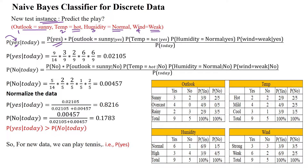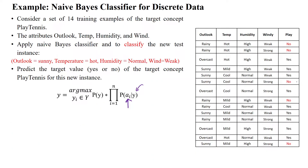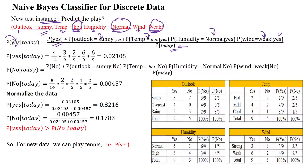For P(Yes): the prior probability of yes, multiplied by P(outlook=sunny | yes), P(temperature=hot | yes), P(humidity=normal | yes), and P(wind=weak | yes). The probability of today is constant and can be ignored. Out of 14 samples, 9 are 'yes', so P(yes) = 9/14.